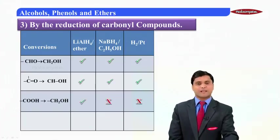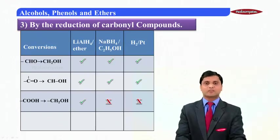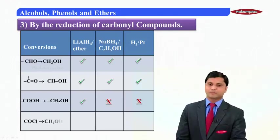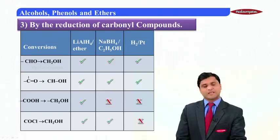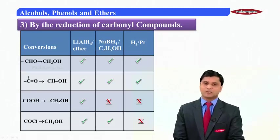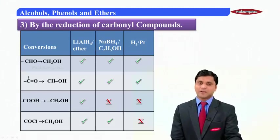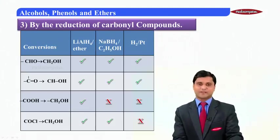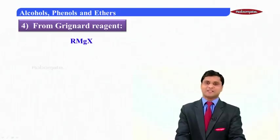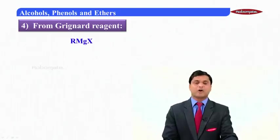For the conversion of a carboxylic acid to a primary alcohol, we must use only lithium aluminum hydride — sodium borohydride and hydrogen on platinum cannot be used. An acid chloride (–COCl) can be converted into an alcohol only by using lithium aluminum hydride or sodium borohydride.